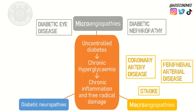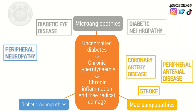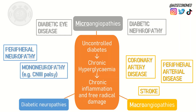Diabetic neuropathy refers to the nerve damage that is occurring secondary to the blood vessel supply to the nerves throughout the body. This may manifest itself as a peripheral neuropathy, or as a mononeuropathy of a single large nerve such as a third nerve palsy.